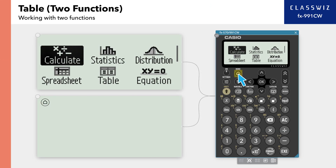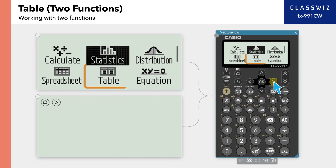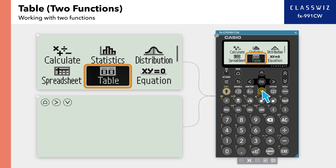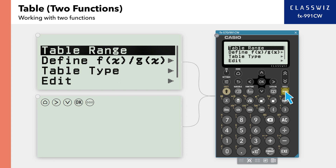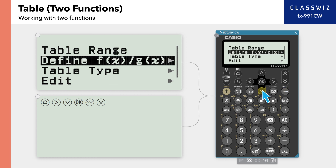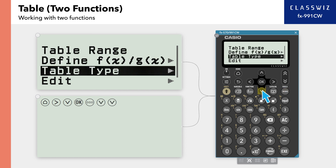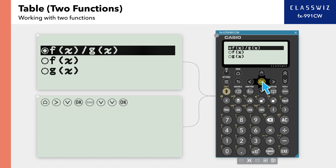First, press Home, then select Table. In order to show two functions, press Tools from the Table screen to select Table Type. Then select FX and GX.